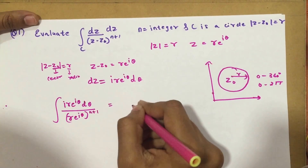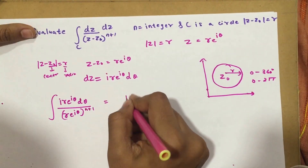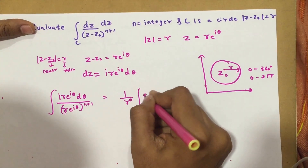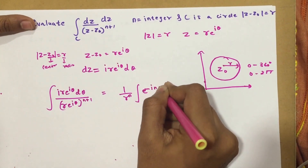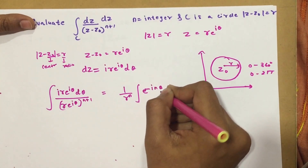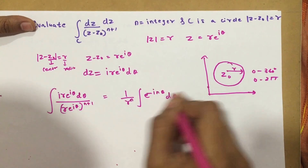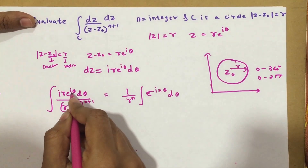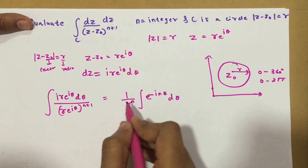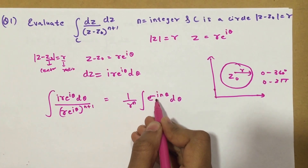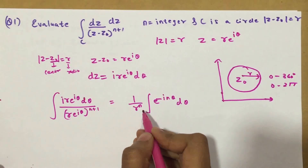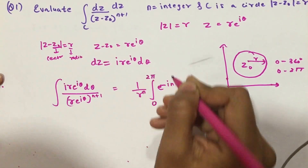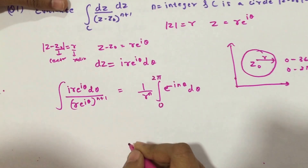After simplification, this gives (1/r^n)·∫e^(−inθ)·dθ. The e^(iθ) terms cancel, and the e^(i(n+1)θ) in the denominator leaves e^(−inθ) in the numerator. This integral needs to be evaluated from 0 to 2π.